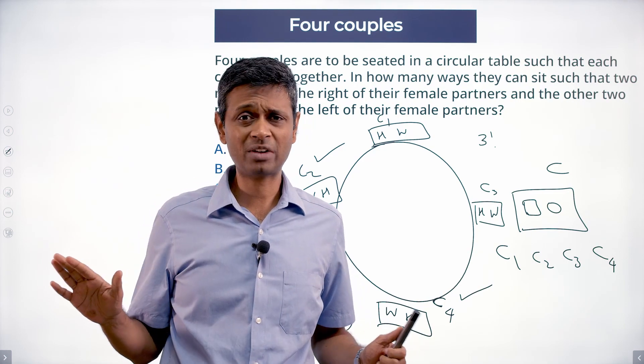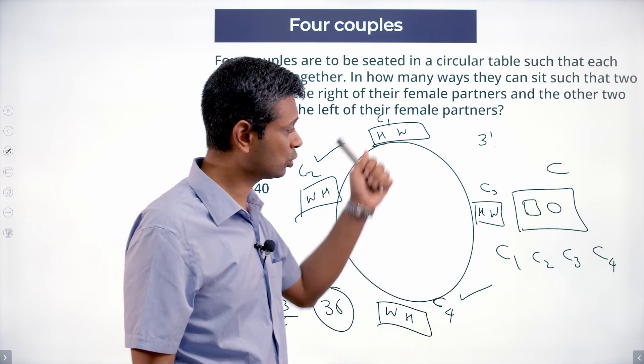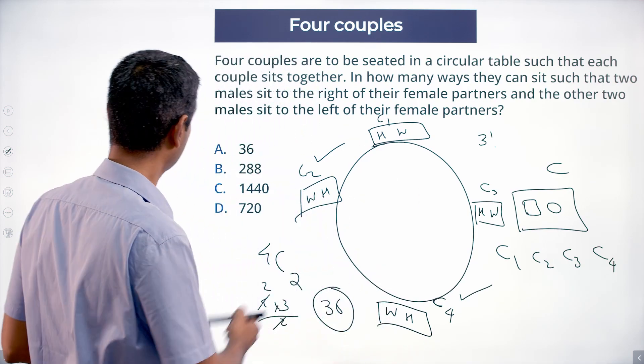After you put the couples there, we're selecting two out of four, 4C2. Three factorial into 4C2, done. After you have selected this, there's nothing else to choose. For these two they'll be to the right, for those two they'll be to the left. Three factorial into 4C2, six into six is thirty-six. Done. Bye.